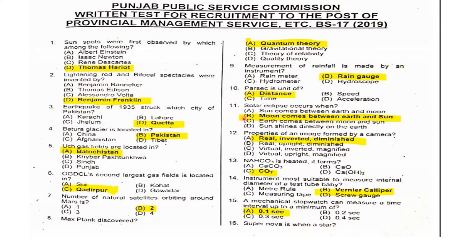Eleventh MCQ: When does a solar eclipse occur? A solar eclipse occurs when the Moon comes between the Earth and the Sun.